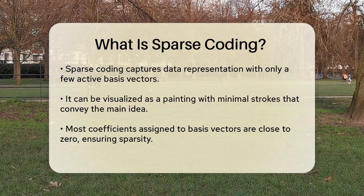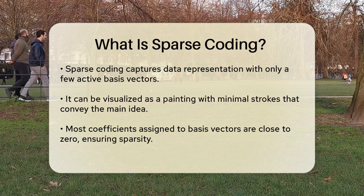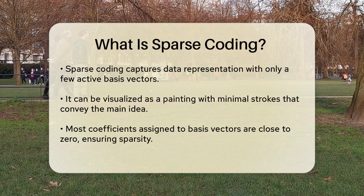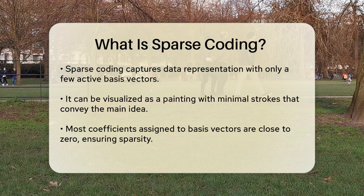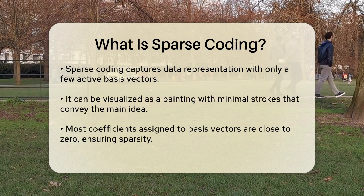This sparsity is enforced by ensuring that most of the coefficients or weights assigned to these basis vectors are close to zero, while only a few are significantly non-zero.